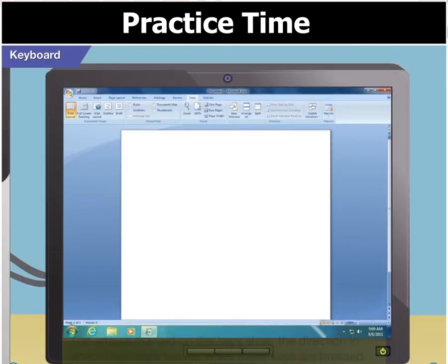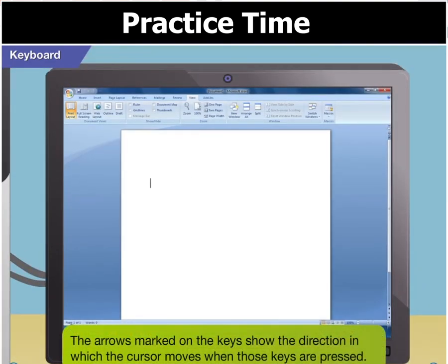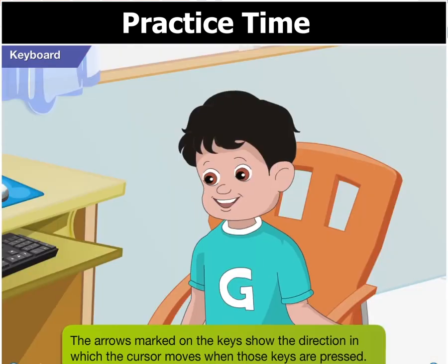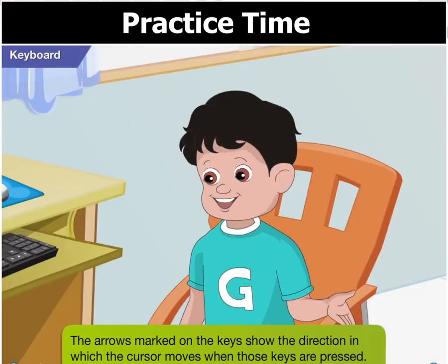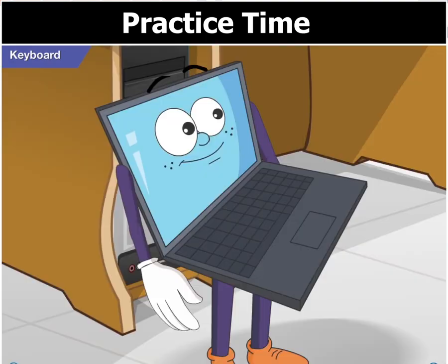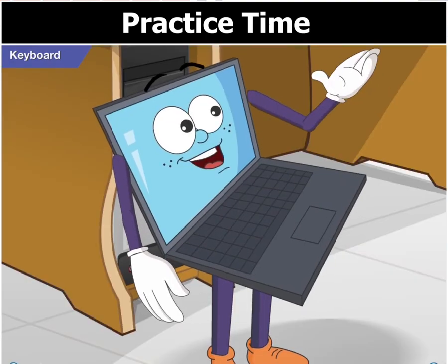So does that mean the arrows marked on the keys show the direction in which the cursor will move when those keys are pressed? Right, Goggle.